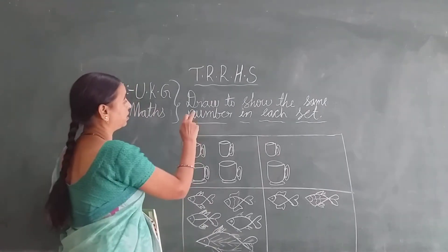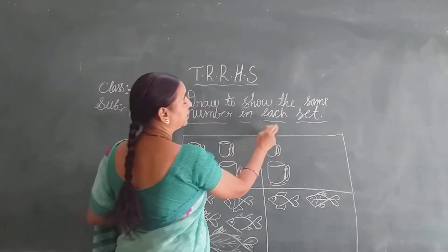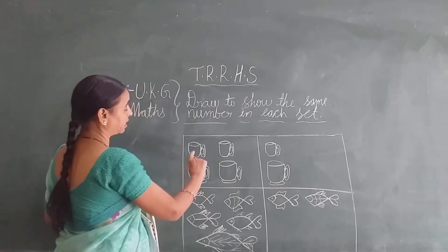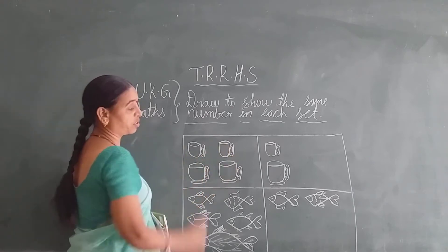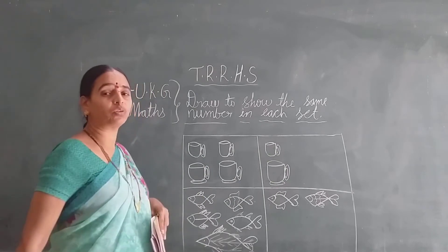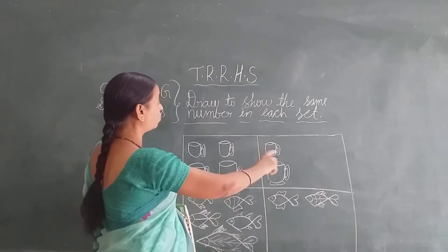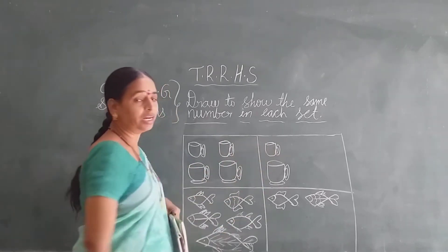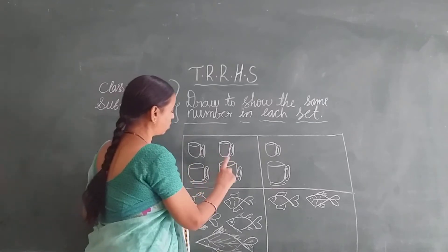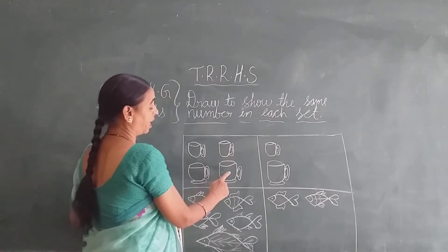Once on the board — look at your book to show the same number in each set. Here, look at here. Here he has given 4 cups, and here he has given only 2 cups. Now count in this box: 1, 2, 3 and 4 pictures.